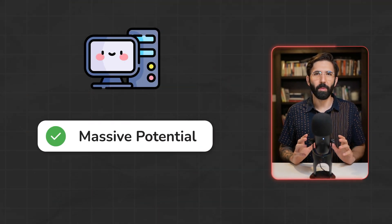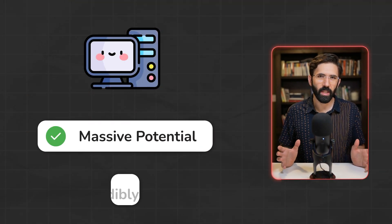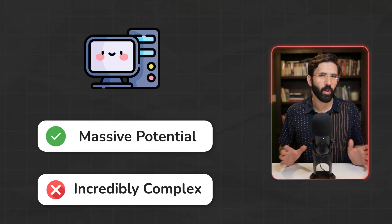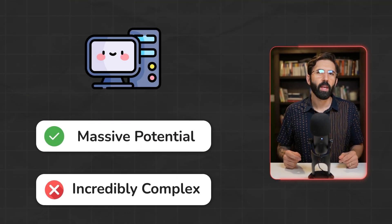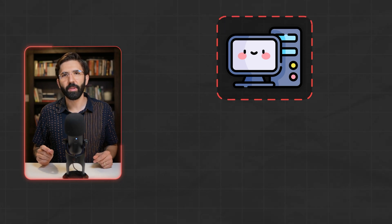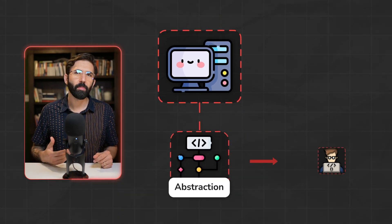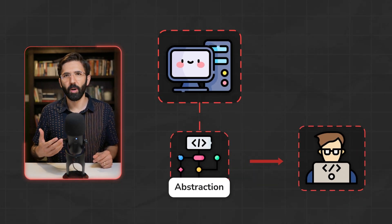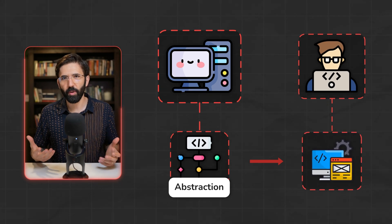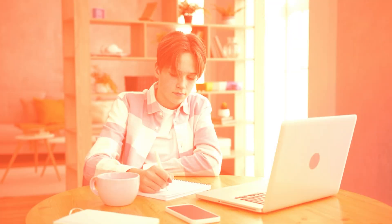Computer hardware offers massive potential, but it's also incredibly complex. In computing, the way that we deal with that complexity is through abstraction. Abstraction makes it easier for developers to produce useful applications, and it's important as a new student of programming to understand this concept, but it can be difficult to wrap your head around it.